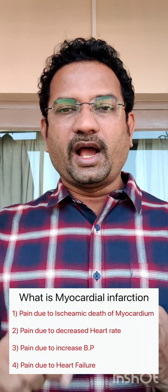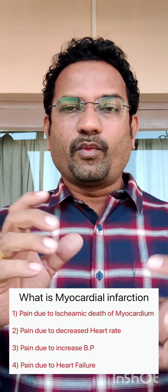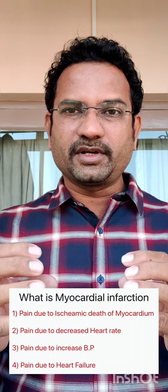Let us understand myocardial infarction. 'Myo' means muscle, 'cardium' means heart, so heart muscle. 'Infarction' means dead tissue. Why does this happen? It happens because of ischemia — ischemia means reduced blood supply. The heart continuously contracts and needs a continuous supply of energy, which it gets through glucose and ATP. Glucose is supplied to the heart through the blood supply.